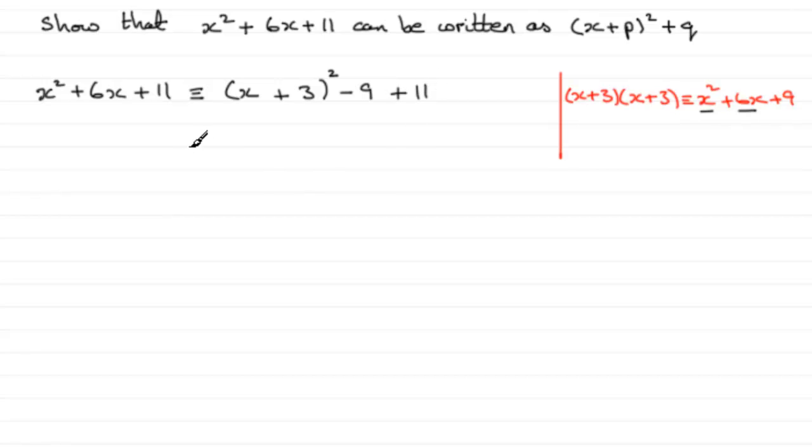So you can see that this is now identical to (x + 3)² - 9 + 11, well that's +2. And we've got this in this format. So I would write that this is identical to (x + p)² + q. And then say what p and q are.